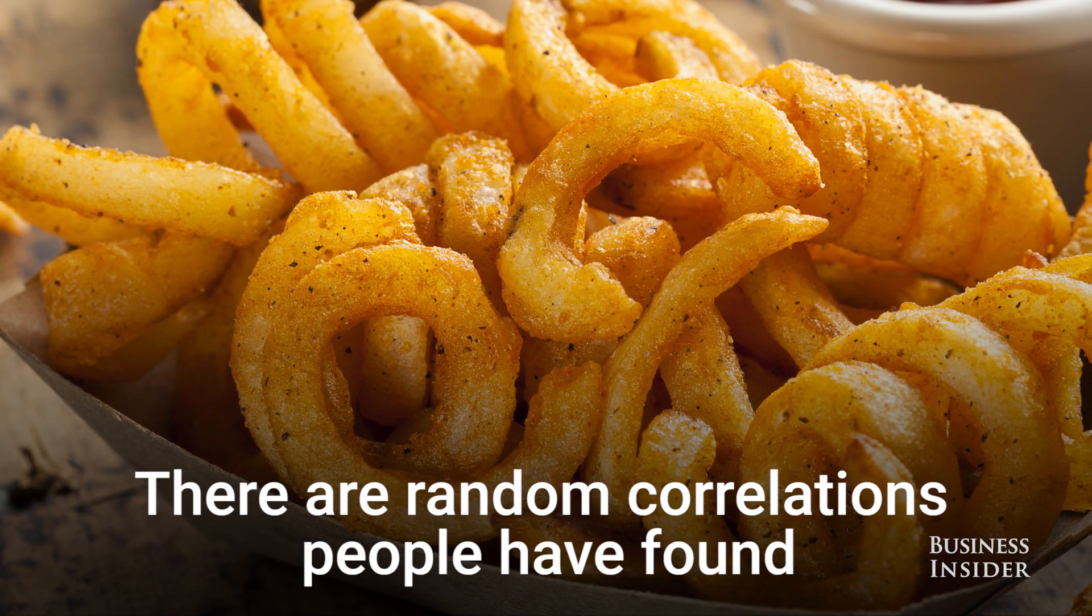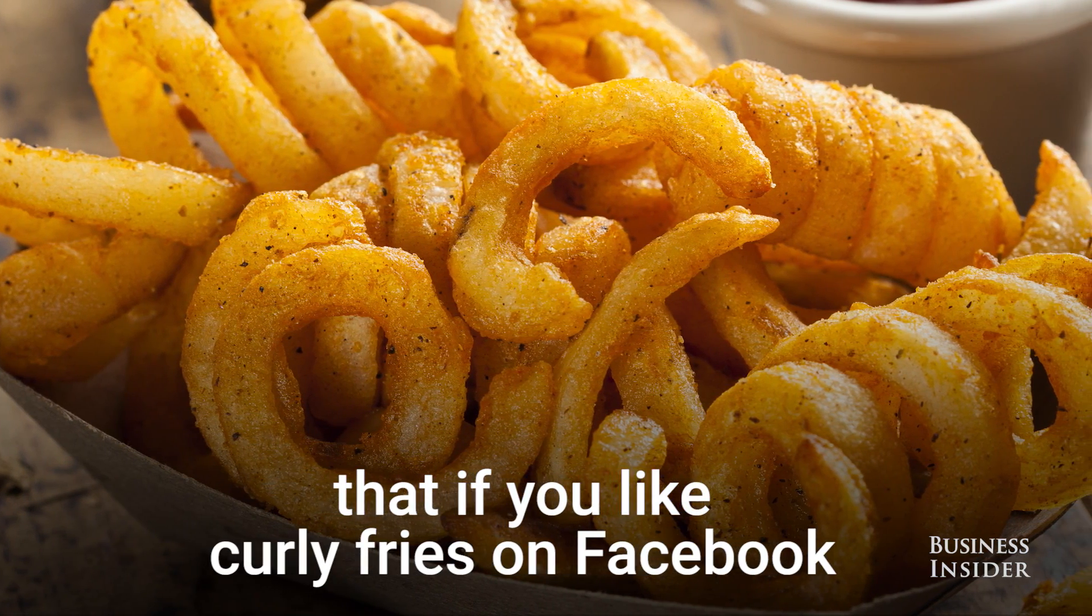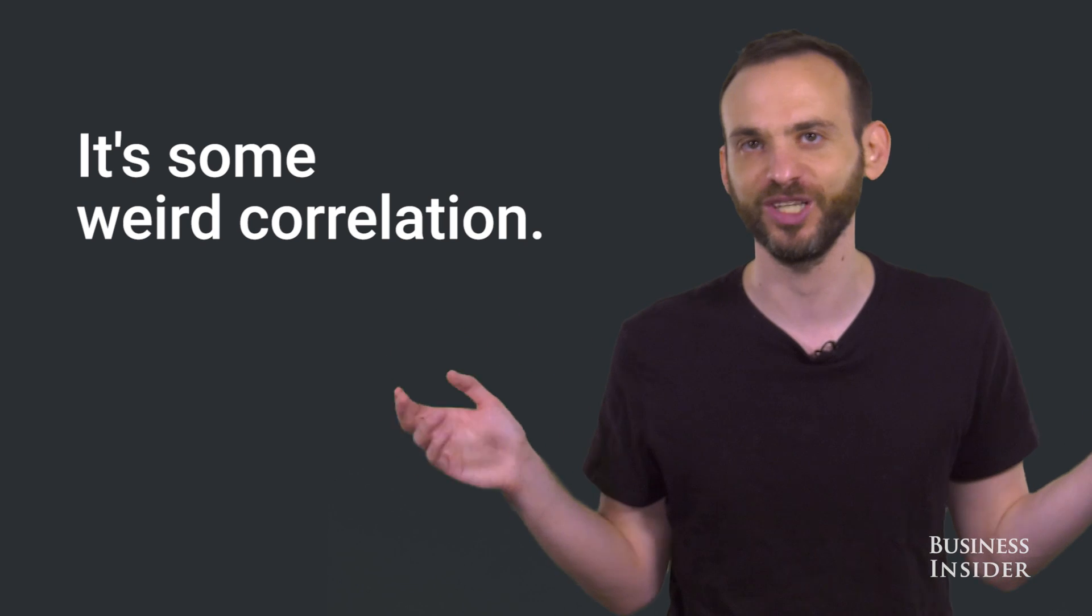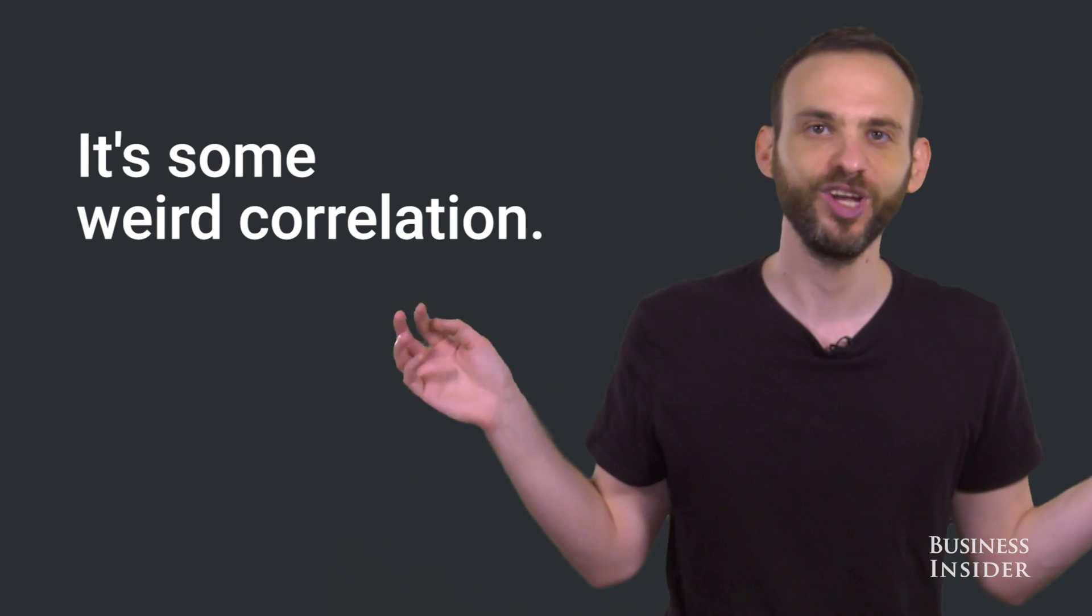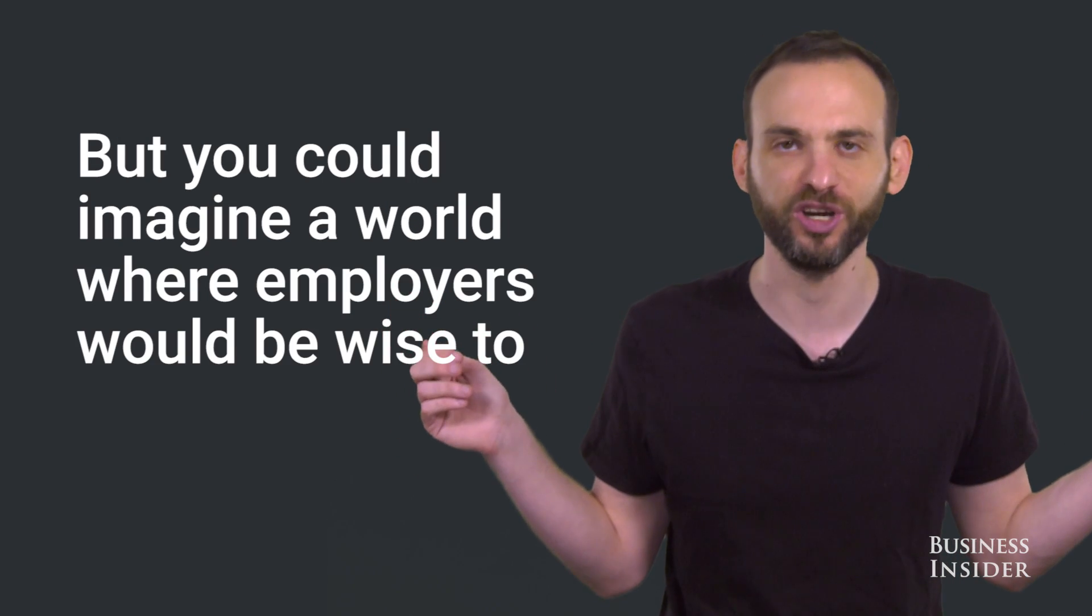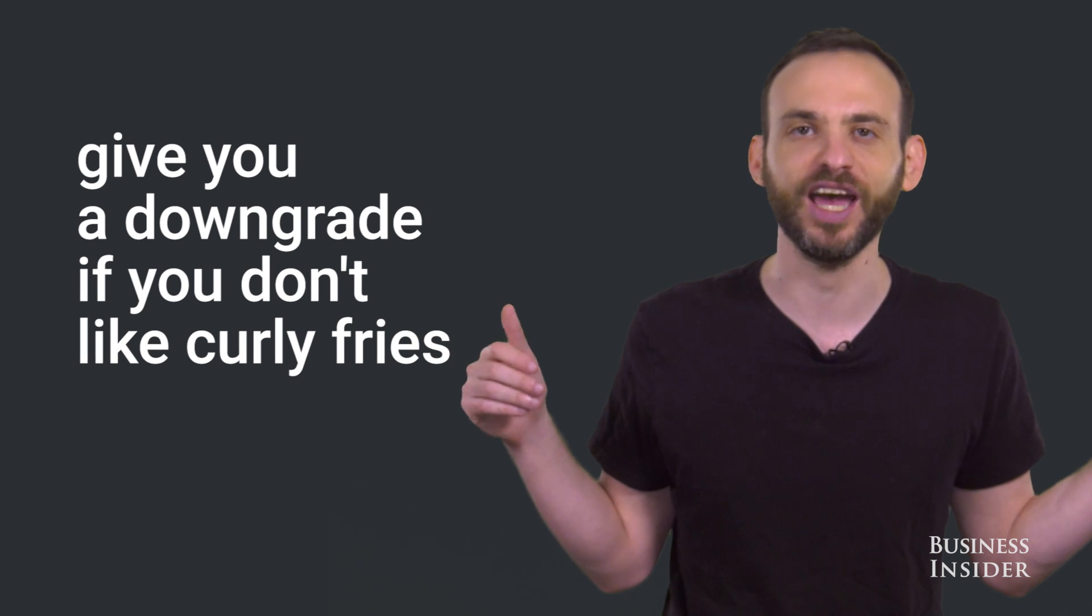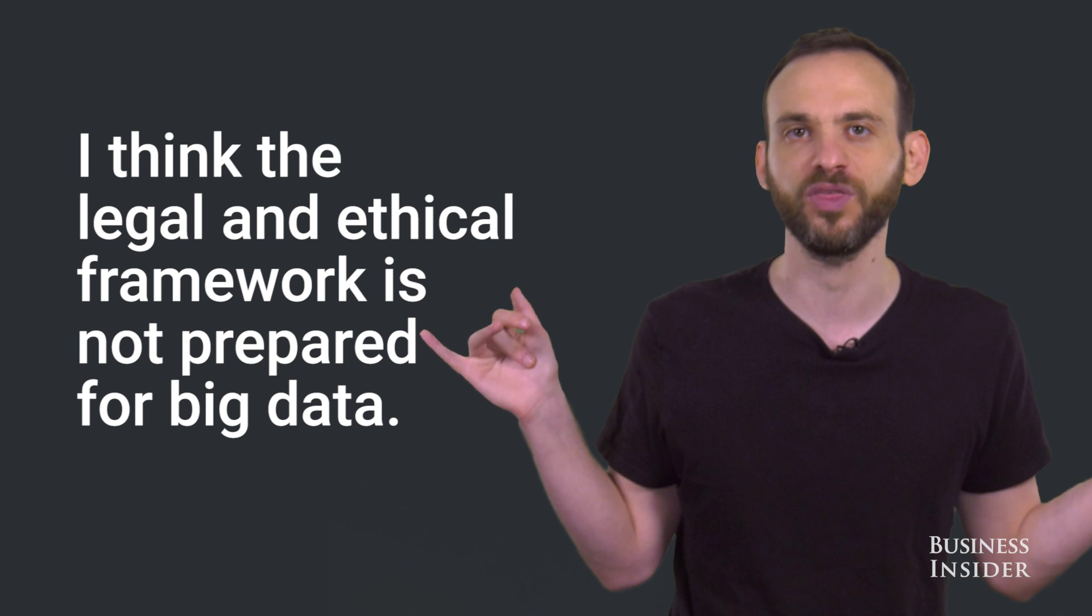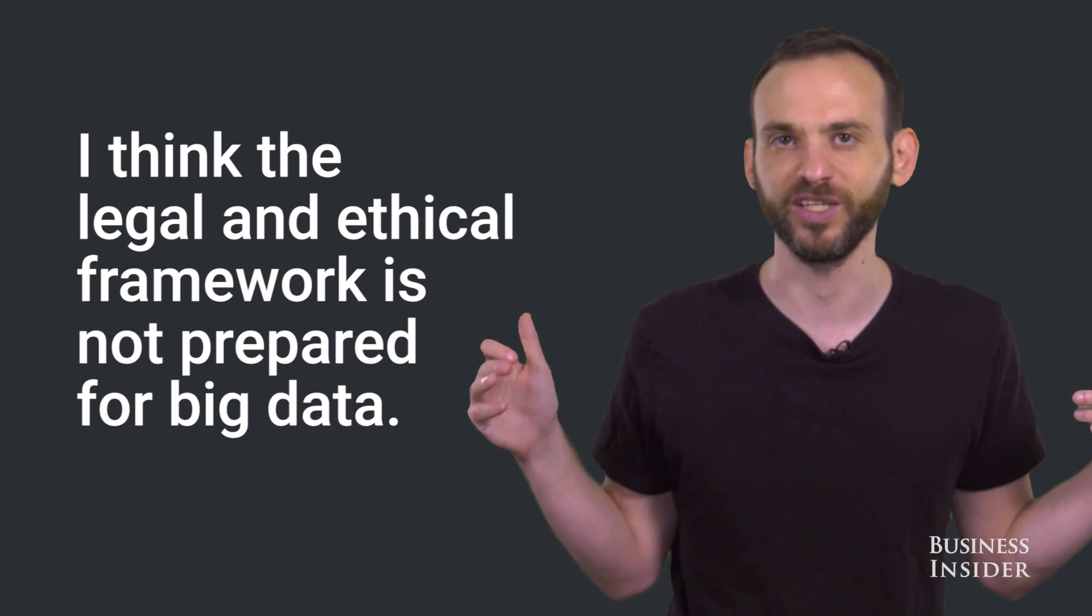There are random correlations people have found that if you like curly fries on Facebook, you're more likely to be intelligent. Hawaii, like no clue, just everything correlates with everything. It's some weird correlation, but you could imagine a world where employers would be wise to give you a downgrade if you don't like curly fries, if you like straight fries instead of curly fries. I think the legal and ethical framework is not prepared for big data.